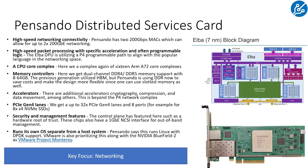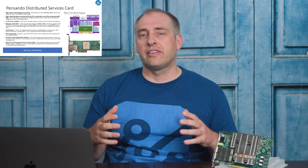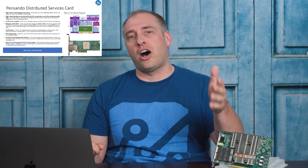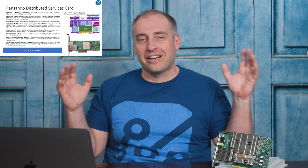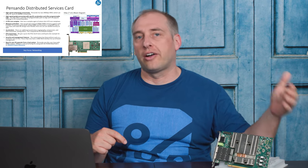The next one is Pensando. Their old card was called Capri; the new one is the seven-nanometer Elba, with up to two by 200-gig Ethernet networking. The story behind Pensando is that these are a lot of ex-Cisco folks who said: what if we could shift a lot of the stuff that's costly to do in switches and offloaded that to the server and the NIC? What you get is a highly programmable NIC that takes load off your switches, which means you can use lower-cost switches.